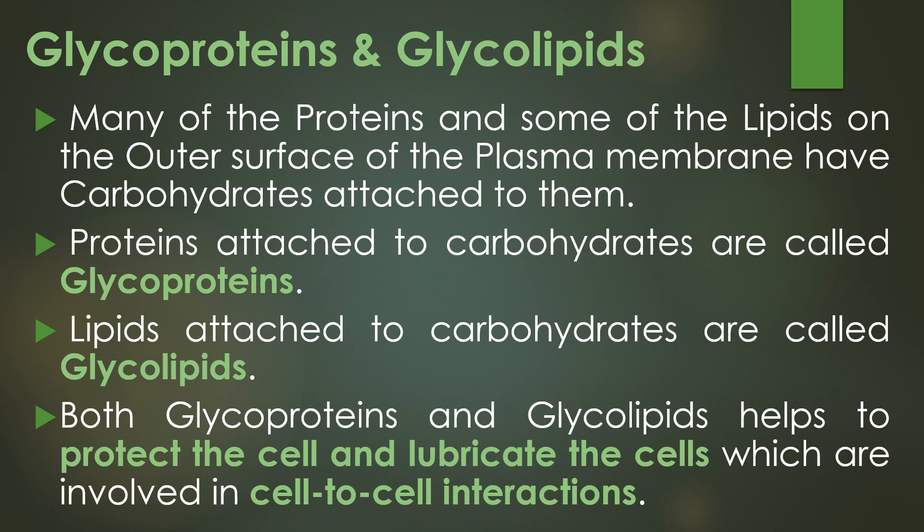Next are glycoproteins and glycolipids. Many of the proteins and some of the lipids on the outer membrane of the plasma membrane have carbohydrates attached to them. The proteins attached to carbohydrates are called glycoproteins, and the lipids attached to carbohydrates are called glycolipids. Both glycolipids and glycoproteins help to protect and lubricate the bacterial cell, and are involved in cell-to-cell interactions.